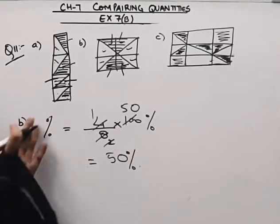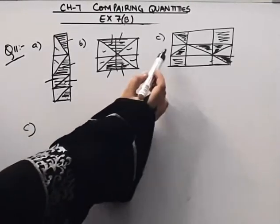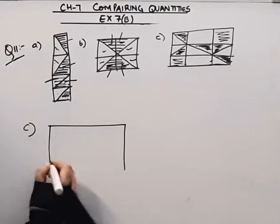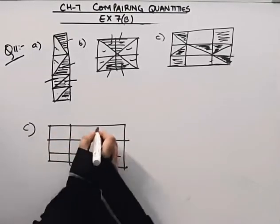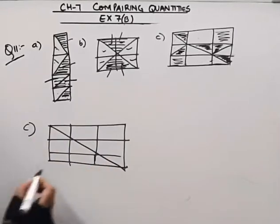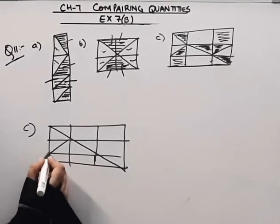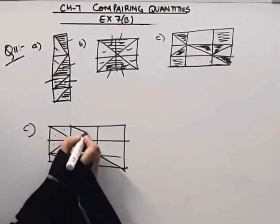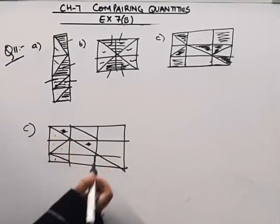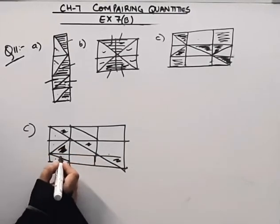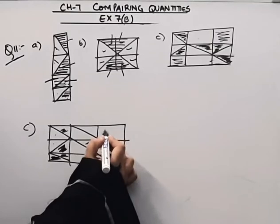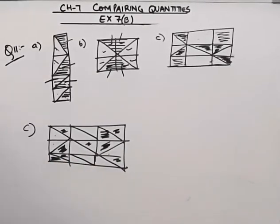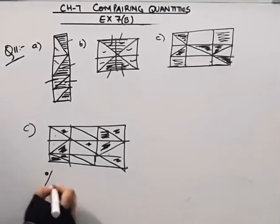Now we will come to the C part. In the C part, how many blocks do we have in total? This whole block is completely shaded. In fact, it's divided into two parts, with 2 portions in each.